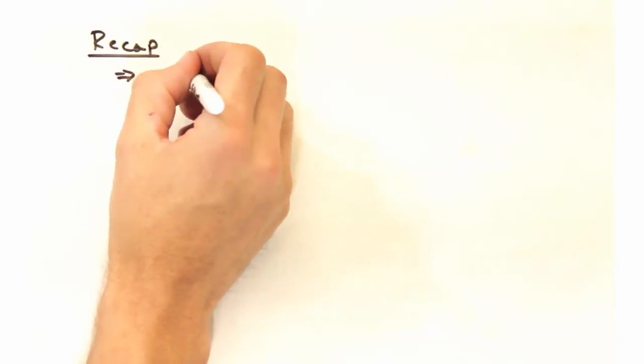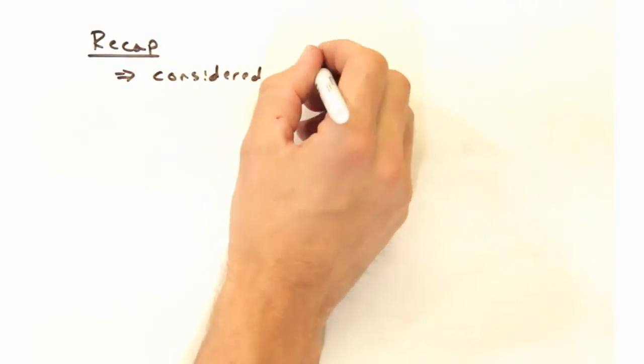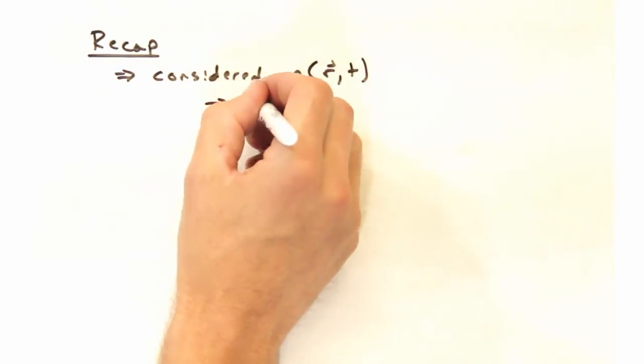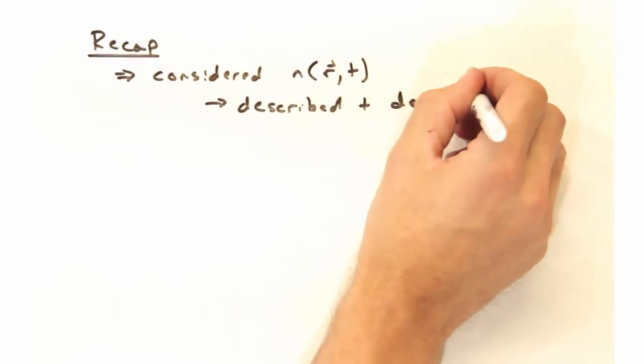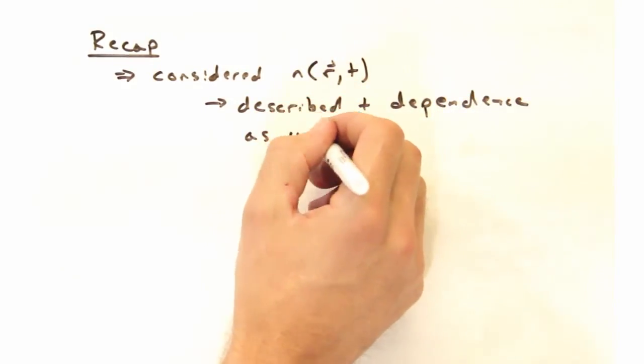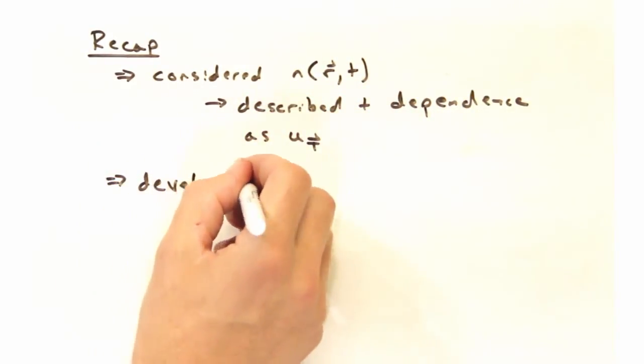So to recap, we started by thinking about the scattering density now not just as a function of position, but also as a function of time. And we were able to describe the time dependence as our u of t that we developed simply for phonons.